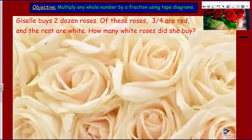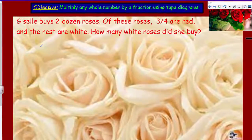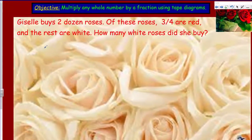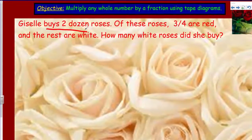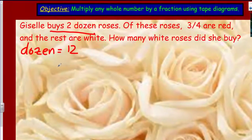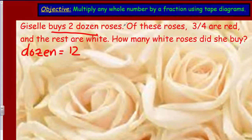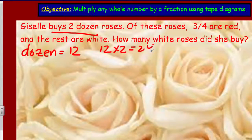First I want to set up an equation. Three quarters are red — so it's like three quarters of the total. Now, two dozen: a dozen is 12, like 12 eggs in a dozen. So this is kind of a two-step problem. I don't want to write 'two dozen' — I want the actual number. Since one dozen has 12, 12 times 2 equals 24.